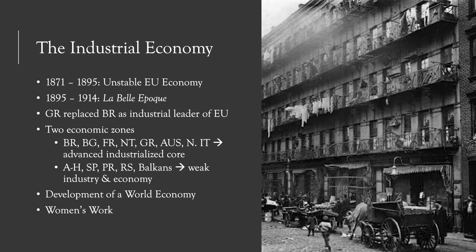From about 1871 to 1895, the European economy was actually somewhat unstable. There were a series of economic crises in different parts of the continent at different times. Some historians even characterize it as a depression. The prices of agricultural products fell and there were slumps in business cycles that led to reduced profits. This recession occurred at different times and places — not a blanket depression like we'll see in the 1920s and 1930s. One lasting consequence of this economic instability was that it contributed to a rise in anti-Semitism.